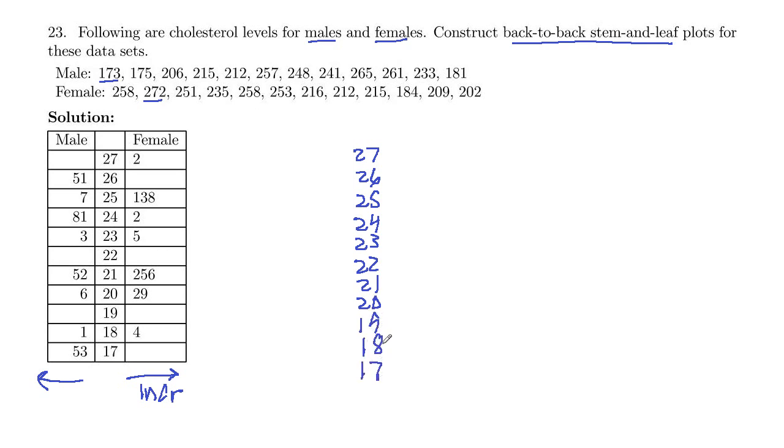And then you just go through the data one at a time. So 173. This is the male data, so that's going to be on the left. And so in the 170s row, you've got a 3. And then we've also got a 175, so that's taken care of, and a 175.